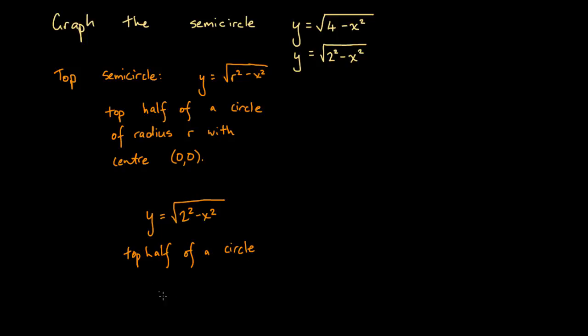whose radius is, instead of r it's going to be 2, because it's got 2 squared here instead of r squared, radius 2, and the centre remains at the origin.